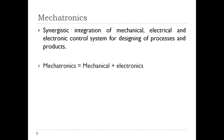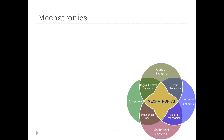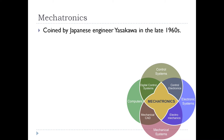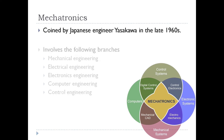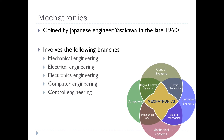The word mechatronics is a combination of mechanical and electronics. The word mechatronics was coined by a Japanese engineer Yaskawa in the late 1960s. This word was coined as a response to the increasing thirst for automation in industries and elsewhere.